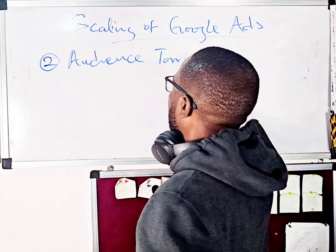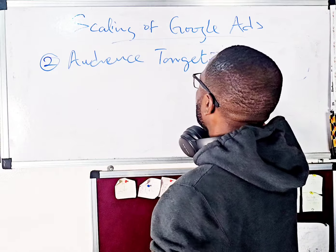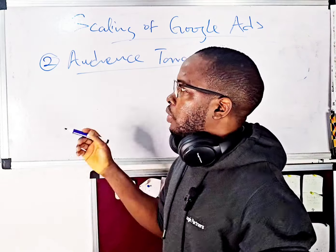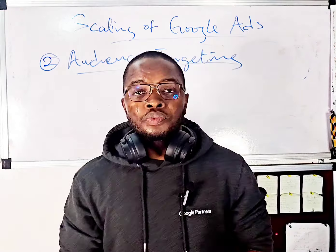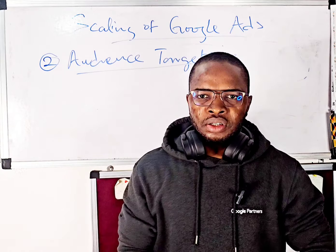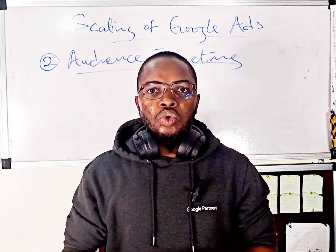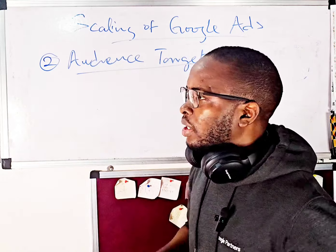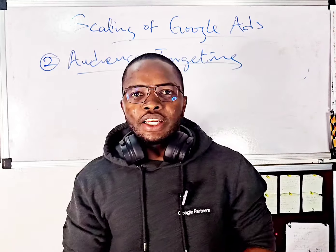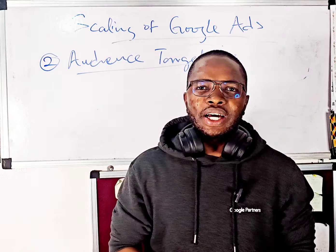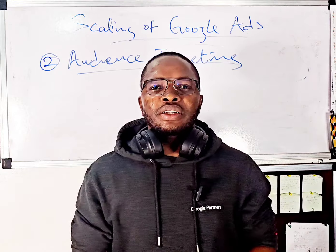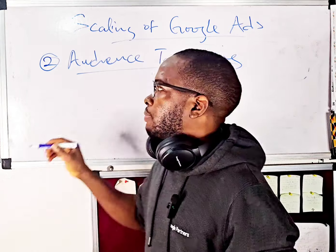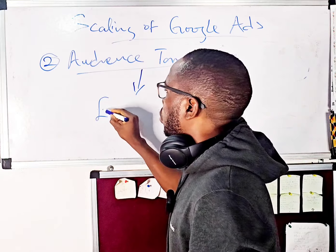Audience targeting is the second way of scaling your Google Ads. Say you are selling blenders and you set up your advertisement to target women who are above 30 years old. When the advert starts serving and you realize it is giving you very good results, the next thing you want to do is look at the possibility of expanding your audience.